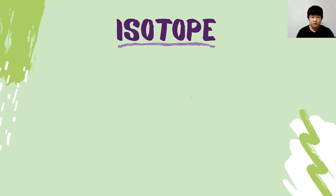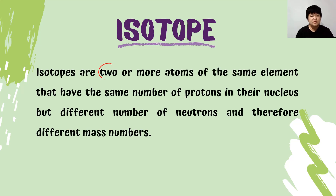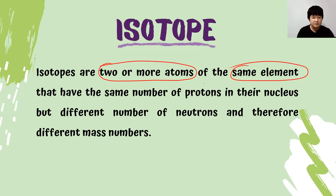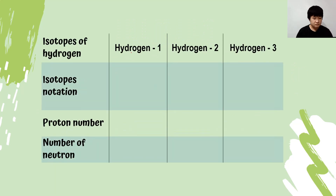Now, what is an isotope? Isotopes are two or more atoms of the same element that have the same number of protons in their nucleus but different numbers of neutrons, and therefore different mass numbers. A simple example is the isotopes of hydrogen, which has three isotopes.